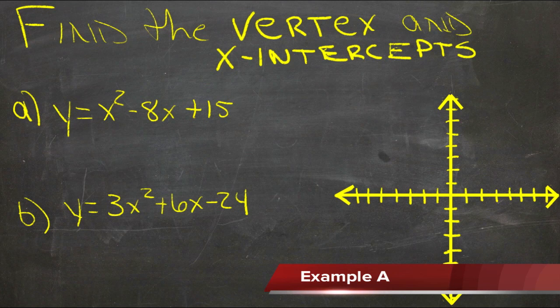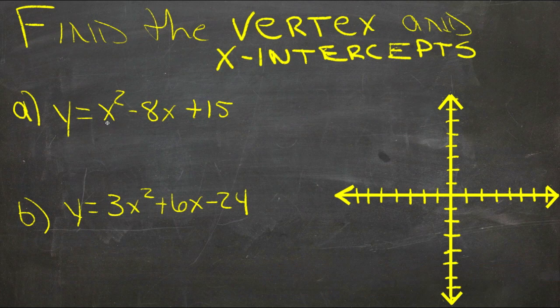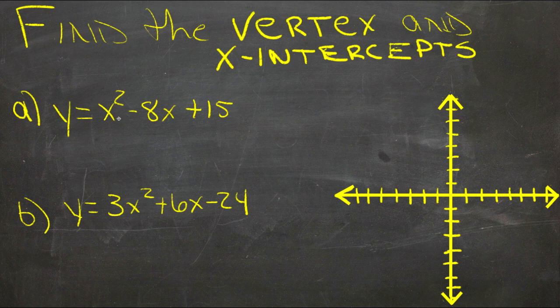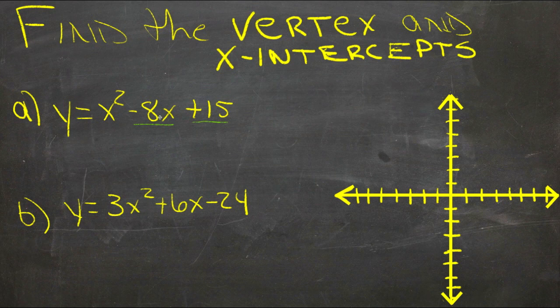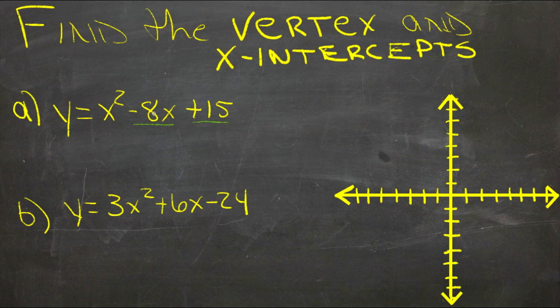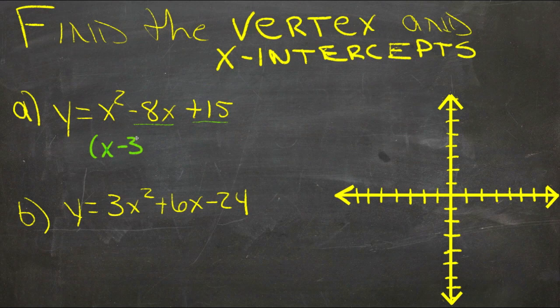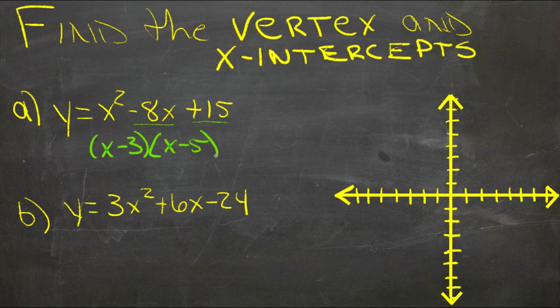So what we're going to do is convert this function into intercept form. And we do that by factoring the right hand side of the equation. If you need a little help factoring trinomials, there's another lesson on that. I recommend checking it out if you're not comfortable with it. But basically what we're doing is looking for two numbers that multiply to be positive 15 and add to be negative 8. So the factors of 15 that are probably relevant would be 5 and 3. And since we could do a negative of each, that would multiply to be a positive and add to be negative 8. So we'll end up with x minus 3 times x minus 5 as our factor of this trinomial here on the right hand side.